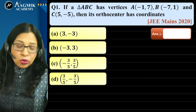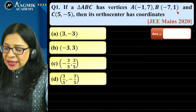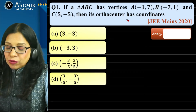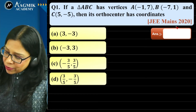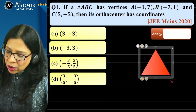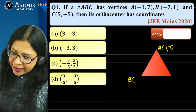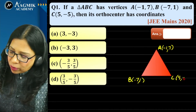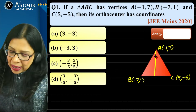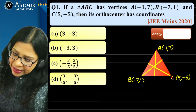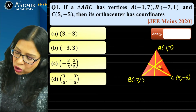Question 1 (JEE Mains 2020): Triangle ABC has vertices A(−1, 7), B(−7, 1), C(5, −5). Find the orthocenter. Let orthocenter H have coordinates (α, β). Since AH ⊥ BC, the product of slopes of AH and BC equals −1.